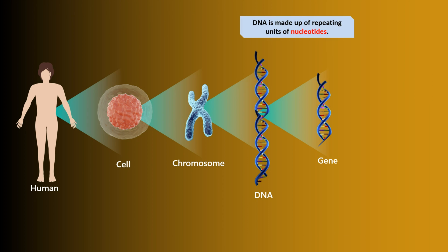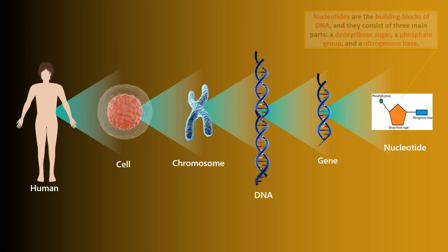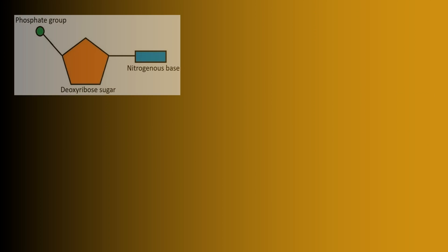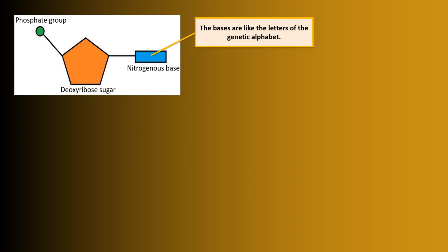DNA is made up of repeating units of nucleotides. Nucleotides are the building blocks of DNA, and they consist of three main parts: a deoxyribose sugar, a phosphate group, and a nitrogenous base.